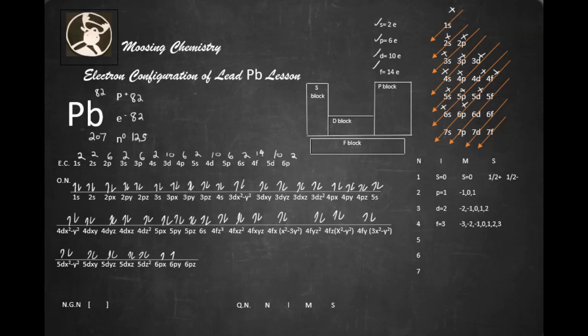Now we'll use the noble gas notation, which is a shortcut. The nearest noble gas to lead is xenon, not radon because it's after it.